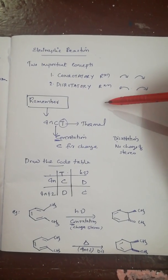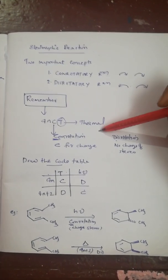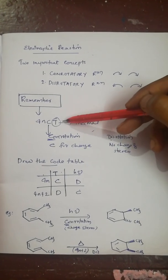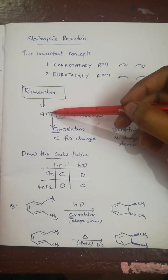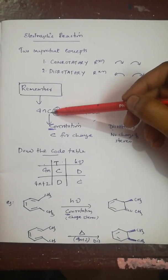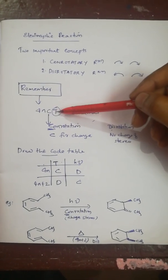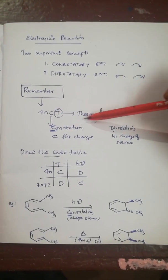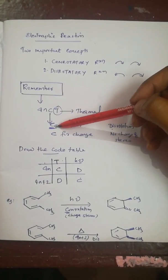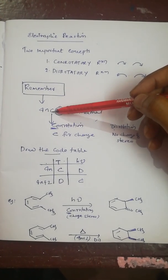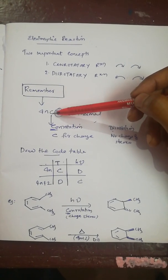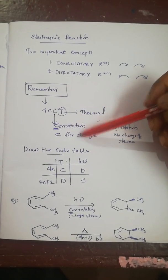Here is a shortcut to solve the question. Just remember the code: 4n CT. '4n' stands for 4n pi electrons, 'C' means conrotatory, and 'T' means thermal reaction. When you see C, you should also remember that C stands for 'change' — meaning you need to change the stereochemistry of the product.